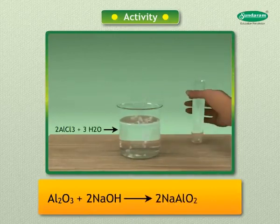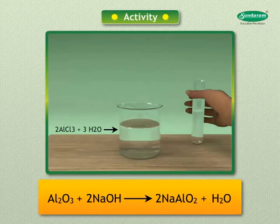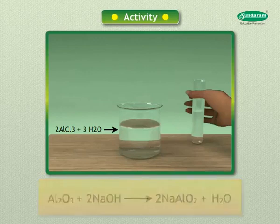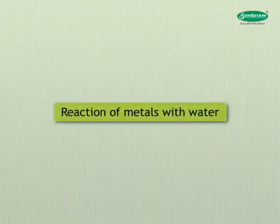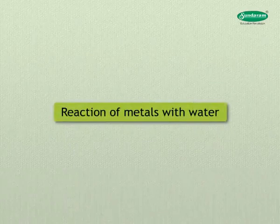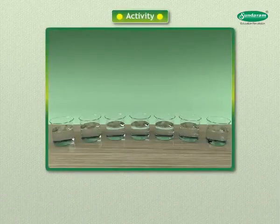Aluminium oxide also reacts with a base to give sodium aluminate and water, so it behaves like an acidic oxide as well. This is why it is amphoteric. Now let us see how metals react with water.